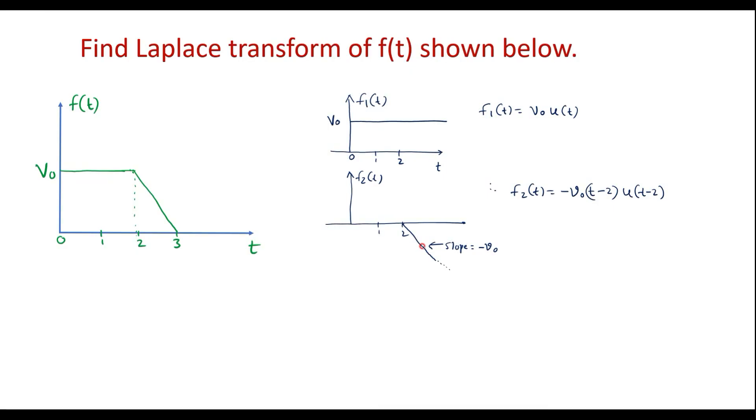We're supposed to stop this ramp signal at t equal to 3. So to stop this ramp signal at t equal to 3, I'm supposed to add one positive ramp signal at t equal to 3. So that by adding that signal with this, it will become 0.